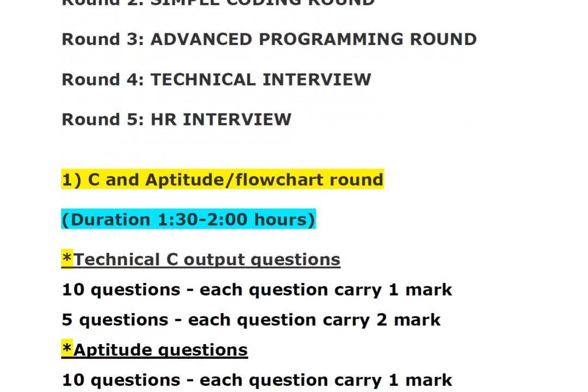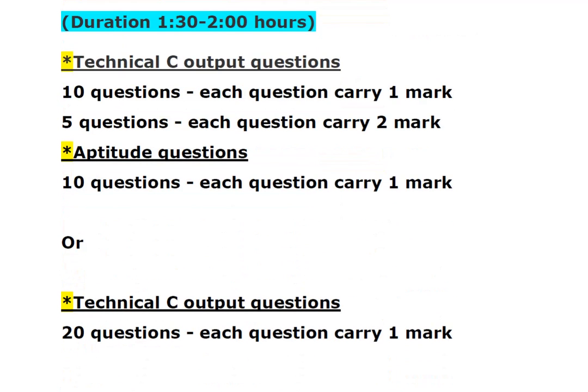The first round is the C and aptitude or flowchart round, where a written pen-and-paper test is conducted. The duration is 1.5 to 2 hours, which includes technical C output questions and aptitude questions. For technical C output questions there are 15 questions — 10 simple questions carry 1 mark each and 5 complex questions carry 2 marks each. In aptitude there will be 10 questions which carry 1 mark each.